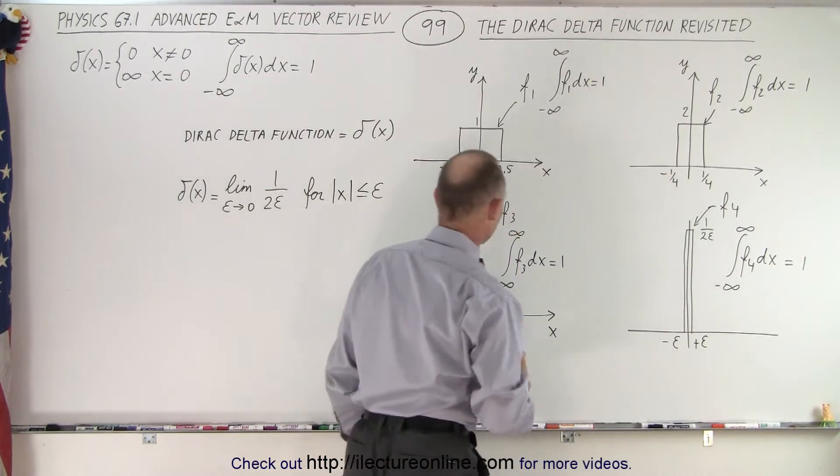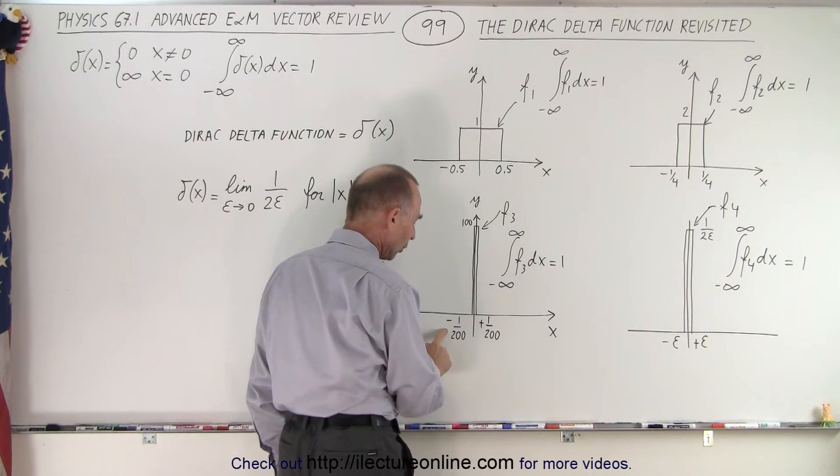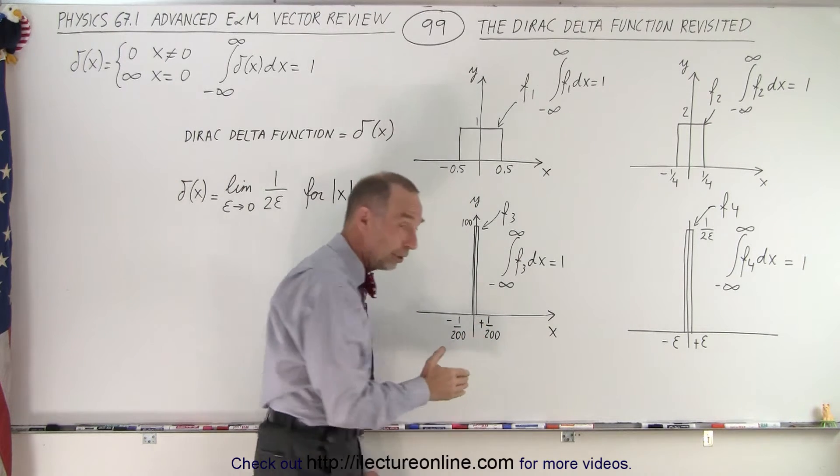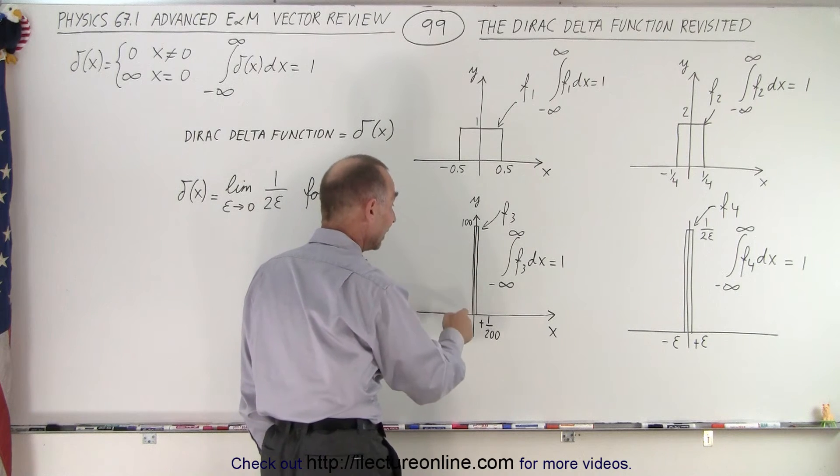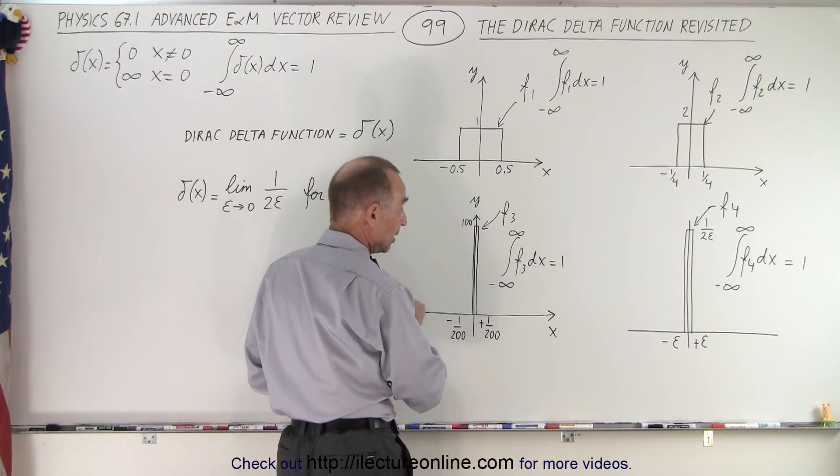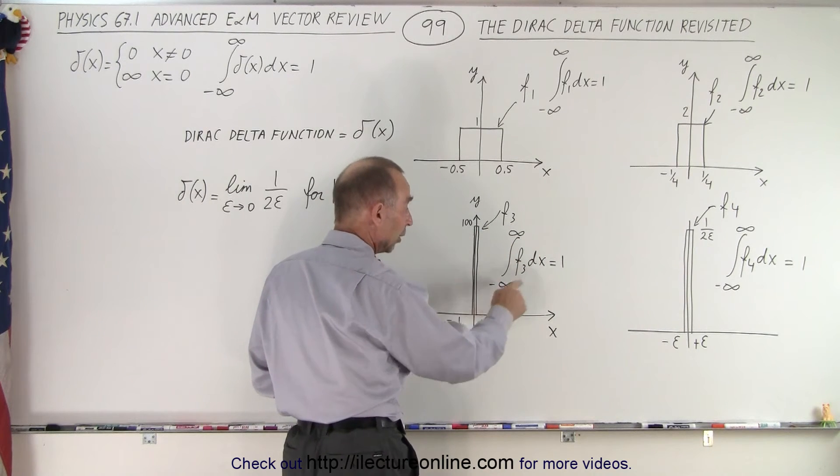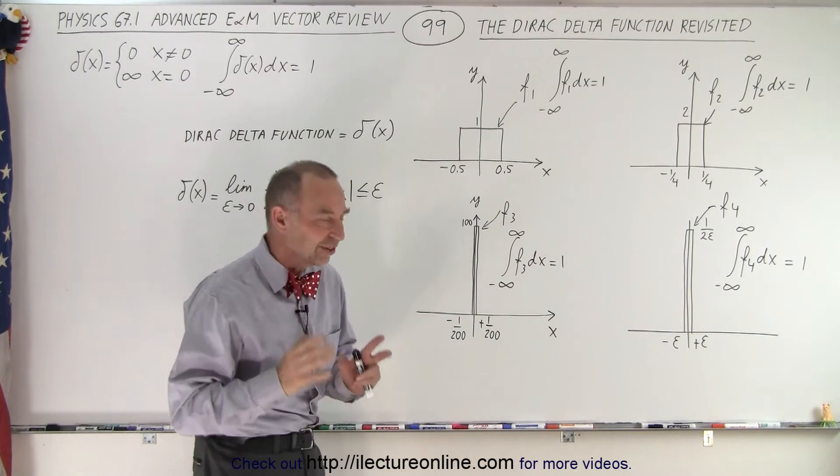Let's take it one step further, and let's say that now the height is equal to 100, and the width starts at minus 1 over 200 to plus 1 over 200. Notice that the width is therefore 1 over 100. When we multiply the times the height, we get 1. In other words, if we define this as function 3, and then we integrate from minus infinity to plus infinity over the function, we still get 1. We get 1 every single time.